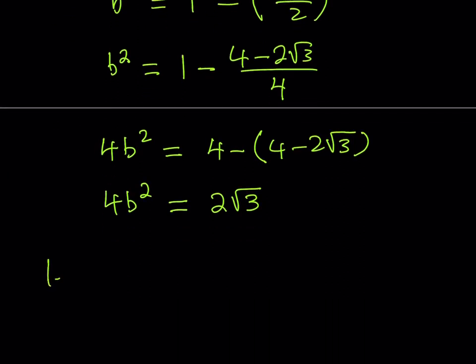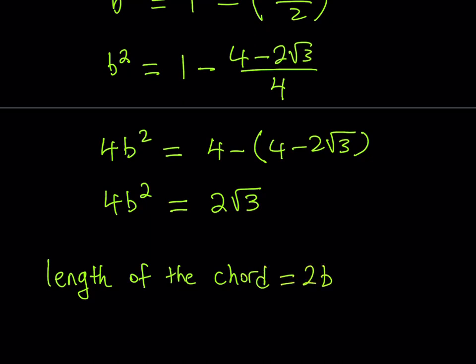The length of the chord is 2B = √(2√3). You can simplify further — writing it as 2^(1/2) times 3^(1/4) — but I'll leave it at that.